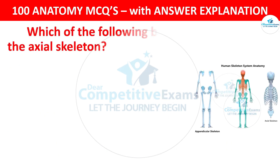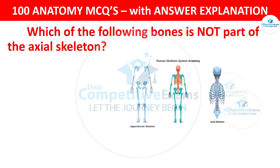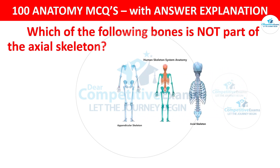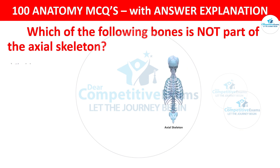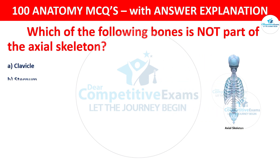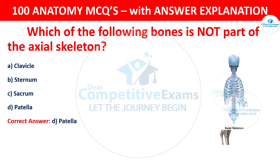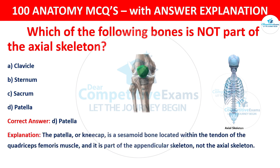Question number 89: Which of the following bones is not part of the axial skeleton? The options are: Clavicle, Sternum, Sacrum, or Patella. The correct answer is D — patella. The patella, or kneecap, is a sesamoid bone located within the tendon of the quadriceps femoris muscle and is part of the appendicular skeleton, not the axial skeleton.